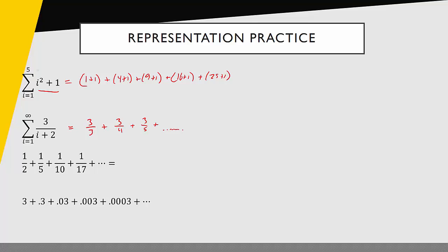The next two problems go from expanded form into sigma notation — that can be a little bit tricky. I'm trying to write the sum starting at i equals 1 going to infinity, and I pair up the changing piece of my series with the index. Thinking about 1, 2, 3, 4: 1 squared is 1, 2 squared is 4, 3 squared is 9, 4 squared is 16. So I can see the denominators are the index squared plus 1, and I can write my series as 1 over i squared plus 1. This is just a matter of experience and trying different things.